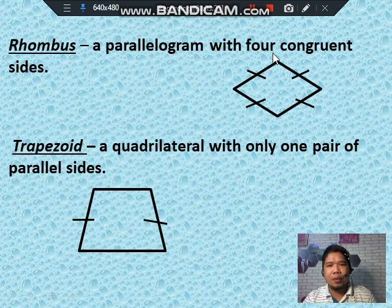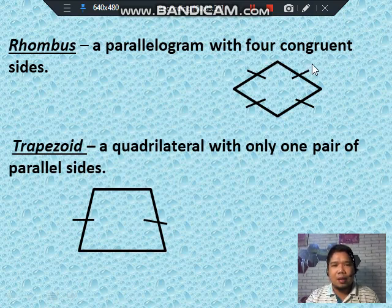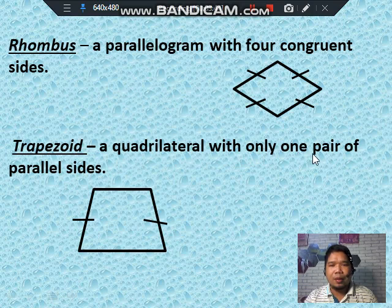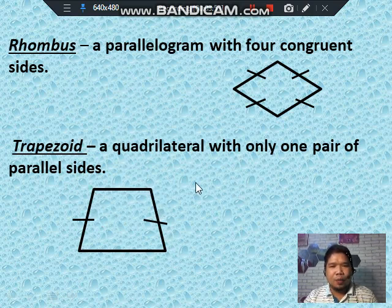A rhombus is a parallelogram with 4 congruent sides — meaning 4 equal sides. Next quadrilateral is a trapezoid: a quadrilateral with only 1 pair of parallel sides. Here is the illustration for trapezoid.